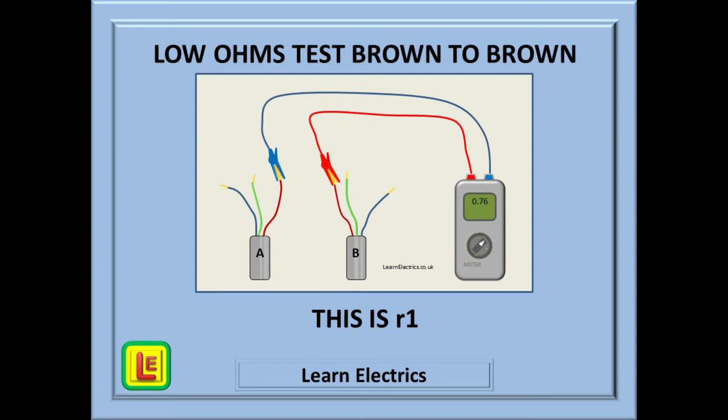Connect between the two brown or live conductors. We should get a low ohms reading that will depend on the length of the circuit. As a guide, it's going to be around one ohm for most domestic socket circuits, maybe half an ohm, maybe one and a half ohms. Every circuit will be different because every circuit will be a different length. If you start getting five ohms or large readings like this, then you've got a problem. In this example we have recorded 0.76 ohms, so we can write this down. This is known as little r and the number one with a small letter r. The little r tells us it is an end-to-end test, and the one tells us it is the brown or line conductor.